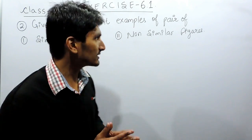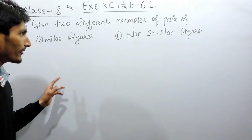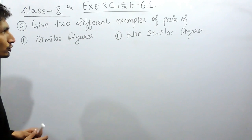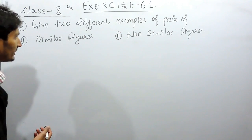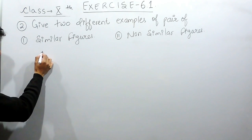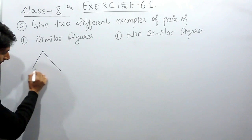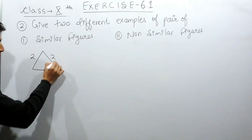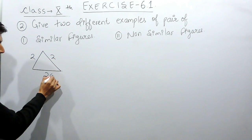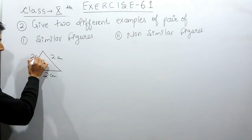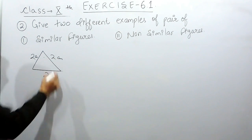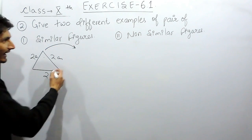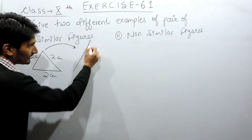But here you have to give the mathematical examples of similar figures. So first of all, if I consider an equilateral triangle of side 2 cm, 2 cm, and 2 cm, and if I look at this in a magnifying glass and increase the dimension of this twice...